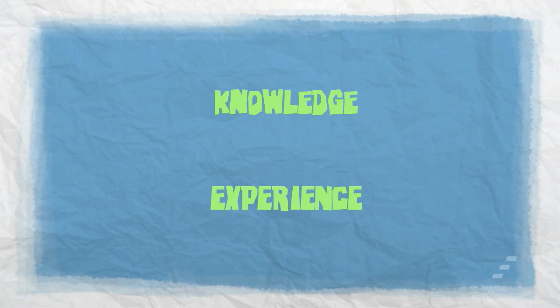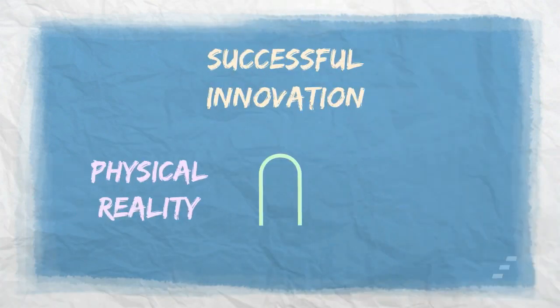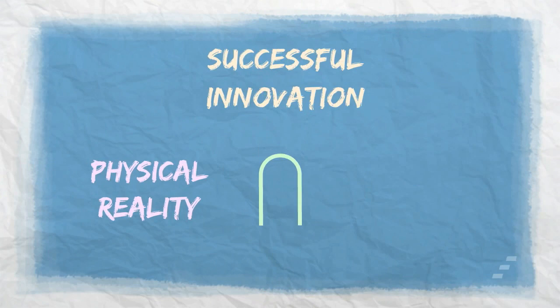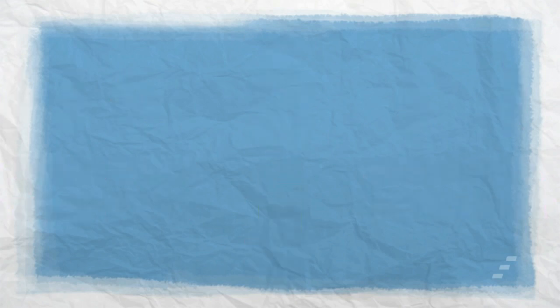We will take this up in our later videos. Remember, a successful innovation is found in the intersection of physical reality of things and human reality of things. Think about both of these in advance. Then find their intersection and make a positive impact on the world.